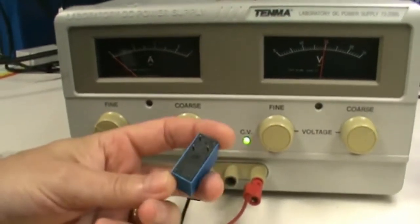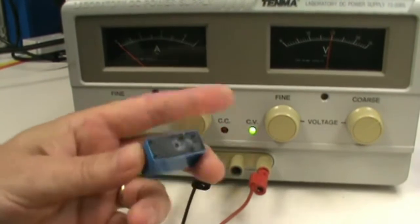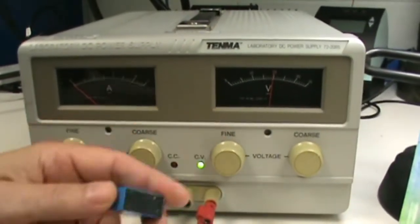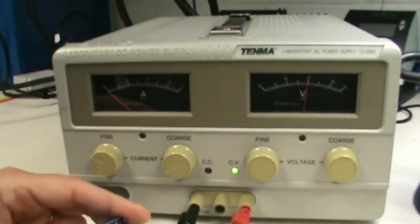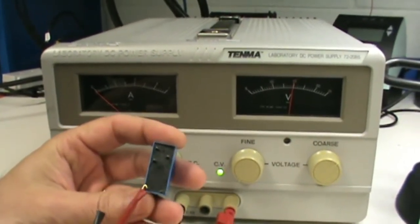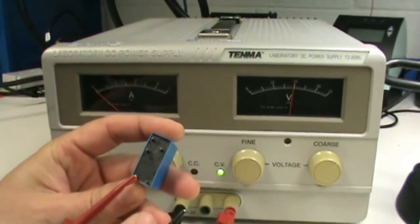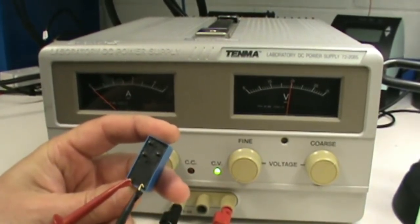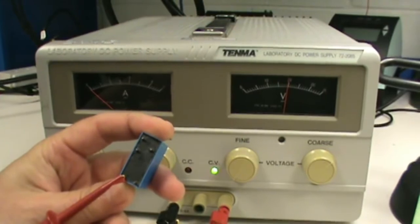So to verify that your relay is working just for the fun of it I've connected a power supply. I'm set at 20 volts and I've current limited it to where it's not going to blow this thing up if I hook it up wrong. So we'll put the little positive there and listen when I hit the negative. Relay is operating.